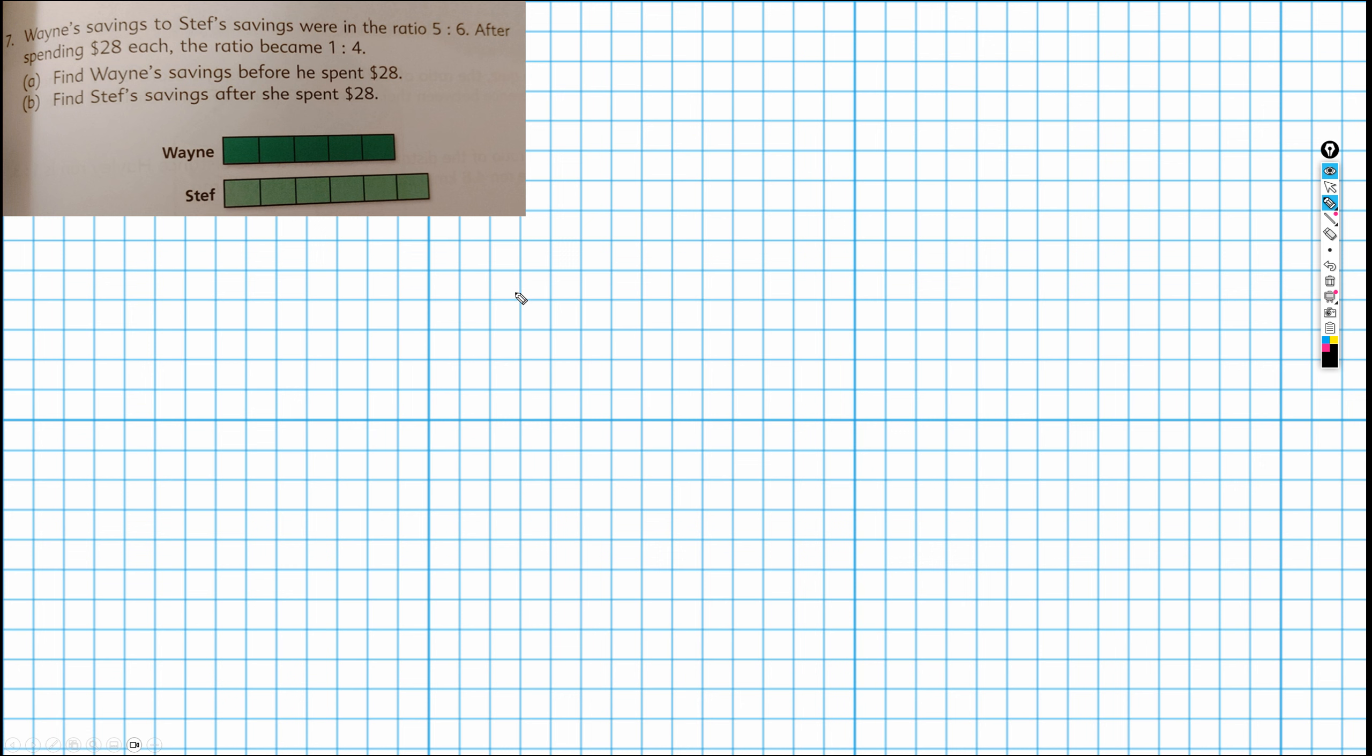Wayne's savings to Steph's savings were in the ratio of 5 to 6. After spending $28 each, the ratio became 1 to 4. We're asked to find Wayne's savings before he spent $28 and Steph's savings after she spent $28. We're going to assume no knowledge of any algebra or anything like that. We're just going to see if we can draw this.